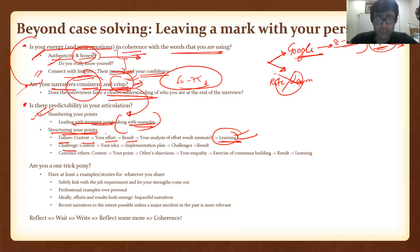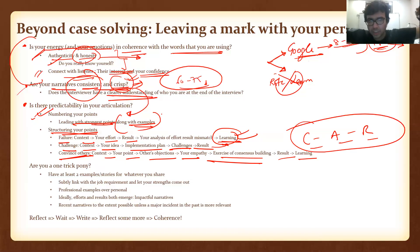Challenge: Let's say describe a challenge. Context, your idea, implementation plan, what are the challenges that you experienced, result, can again go to learning. Sometime when you have to convince others: context, your point, others' objections, how did you empathize with others, if you empathize with others, how did you build the consensus, what was the exercise all about, what was the result, what was the learning. So you see how I'm always mentioning the context. This goes back to my point about CVs also when I said context, action, result.